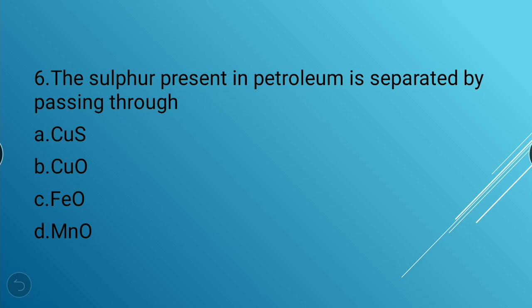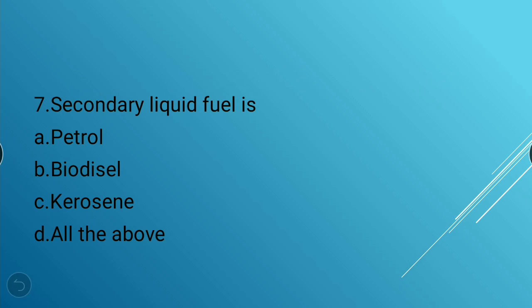Next question: The sulfur present in petroleum is separated by passing through which substance? Options: copper sulfide, copper oxide, ferrous oxide, manganese oxide. The answer is copper oxide (CuO) — sulfur present in petroleum is separated by passing through copper oxide.